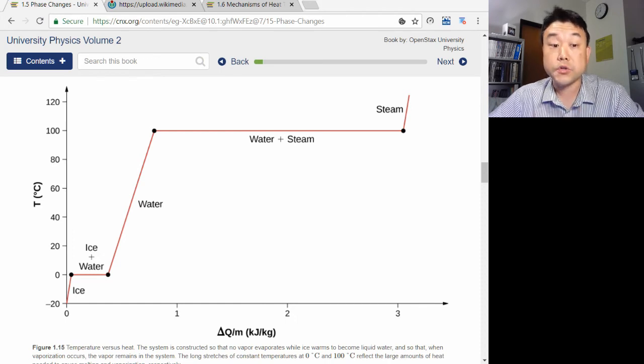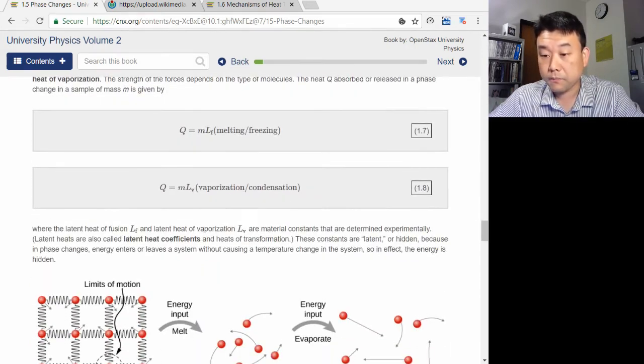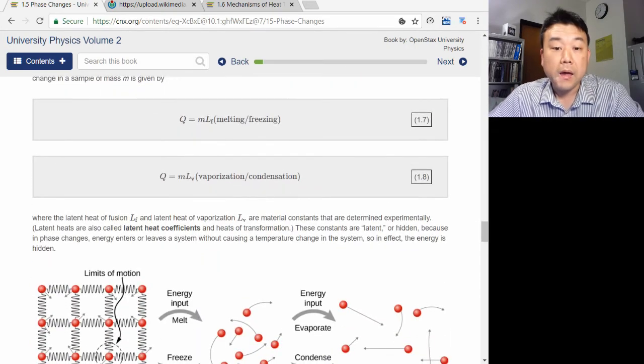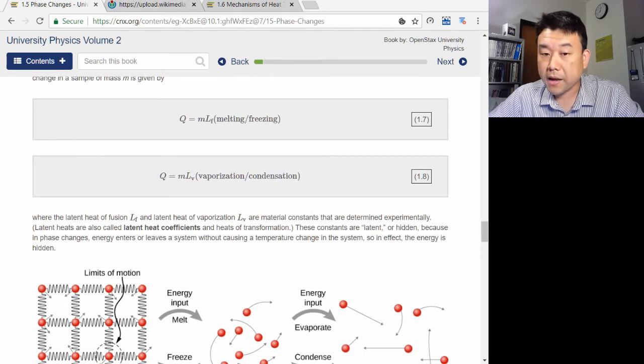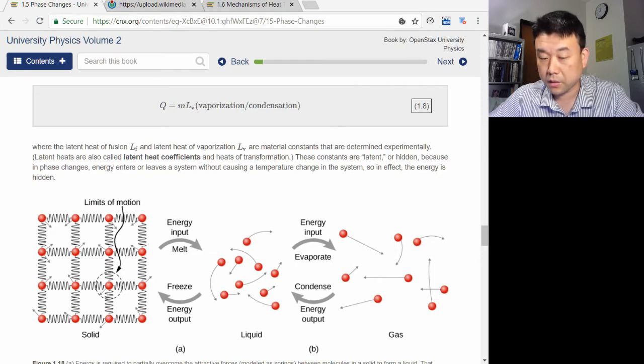Your textbook talks about latent heat: latent heat of fusion for melting, latent heat of vaporization for boiling. This is the amount of heat needed to break bonds between molecules, turning solid into liquid and liquid into gas.